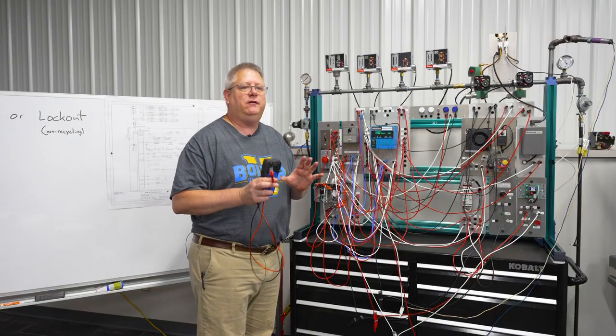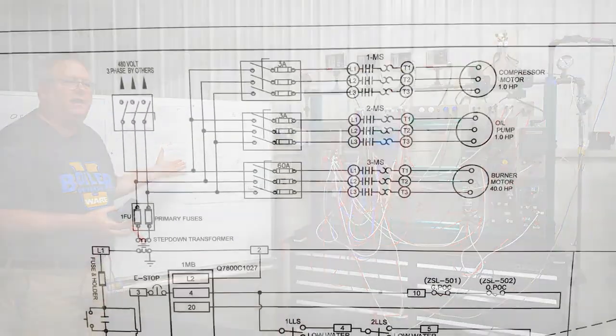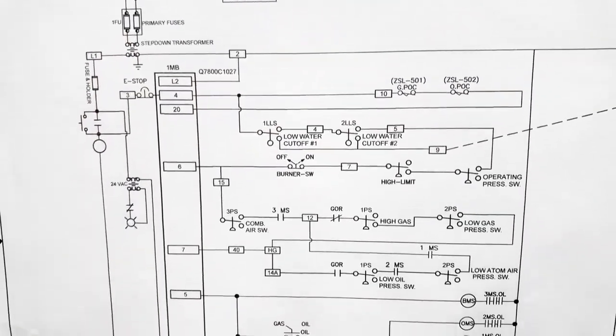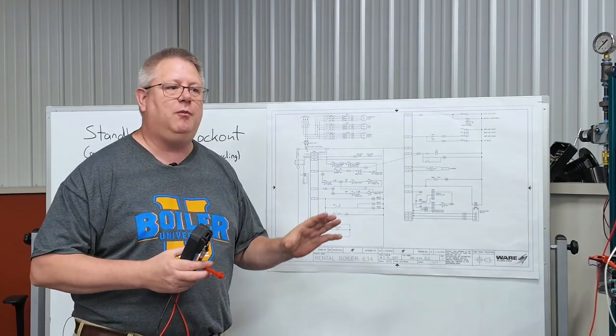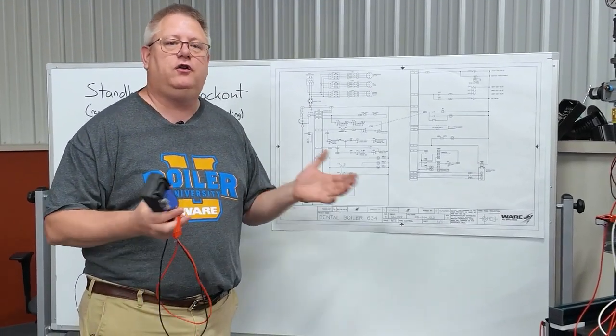So, an absolutely invaluable asset for your boiler room is the burner wiring diagram. It might be obvious that we should have a diagram of how our boiler is wired, but at many sites those have been lost to the years.